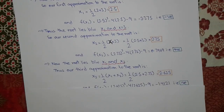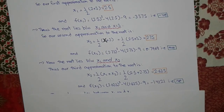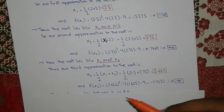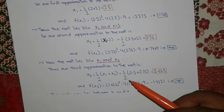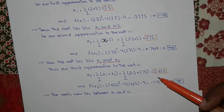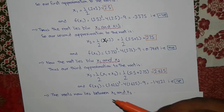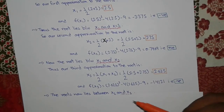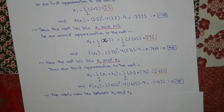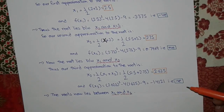The root must lie between x₁ and x₂. Our third approximation is x₃ = ½(x₁ + x₂) = ½(2.5 + 2.75) = 2.625. We check f(x₃) by substituting into the equation, and we find f(x₃) = -1.4121, which is negative.